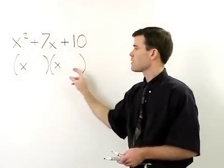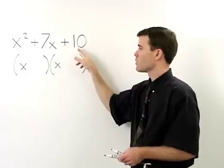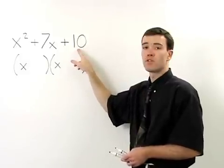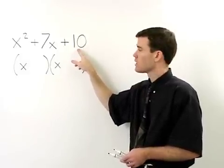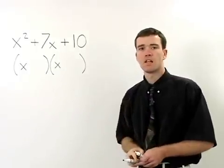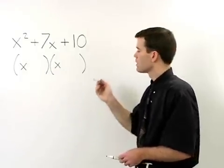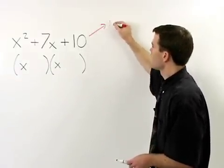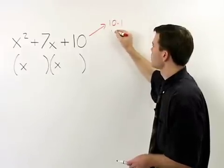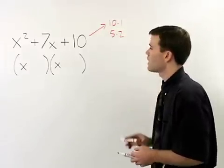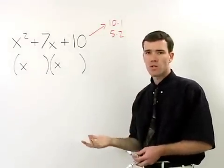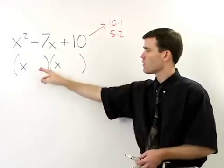The second term in each binomial will be a factor of the constant term, 10. The problem is 10 factors in different ways: 10 times 1, or 5 times 2. So how do we know whether to use 10 and 1 or 5 and 2?